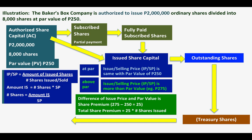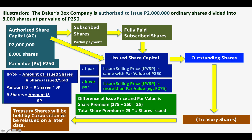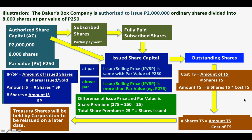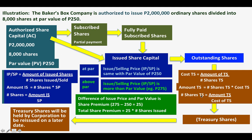You can compute the cost of treasury shares by dividing the amount of treasury shares by the number of shares of treasury shares. Treasury shares can also be called treasury stocks. If the amount of treasury stocks is not given, multiply the number of shares of treasury stocks by the cost. If the number of shares of treasury stocks is missing, divide the total amount of treasury stock by the cost.